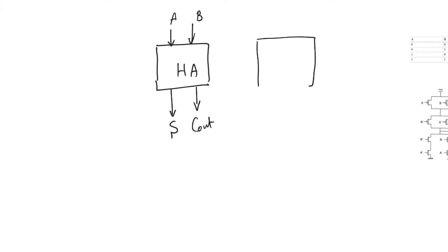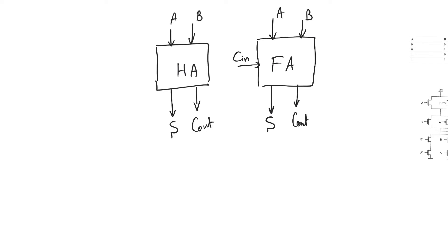The full adder, on the other hand, accepts three inputs: A, B, and C in. It produces two outputs, S for sum and Cout for carry out, the same number of outputs as the half adder. The half adder is sometimes called a 2-to-2 compressor because it takes in two input bits and produces two output bits. The full adder is called a 3-to-2 compressor because it compresses three bits into two bits.